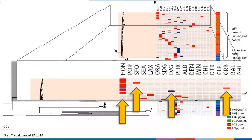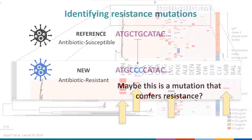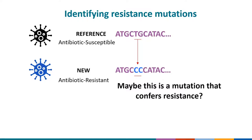A second use of genomics is comparing sequences of resistant and susceptible isolates to possibly identify mutations causing resistance. These analyses have been the focus of a lot of work in Neisseria gonorrhoeae in recent years, particularly with an eye toward advancing the development of molecular assays for susceptibility.